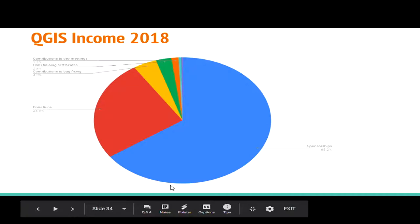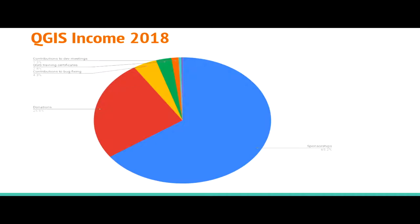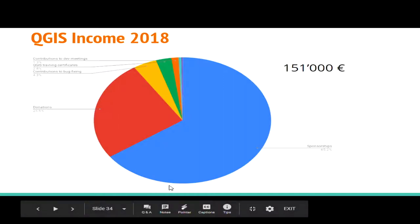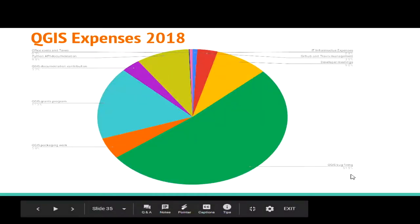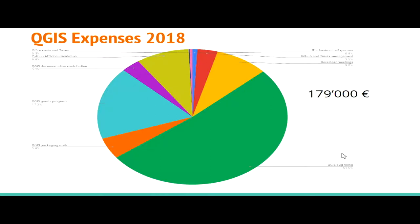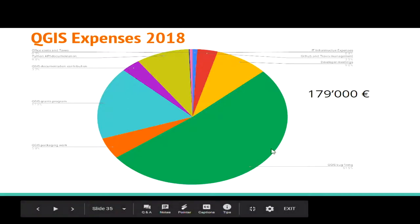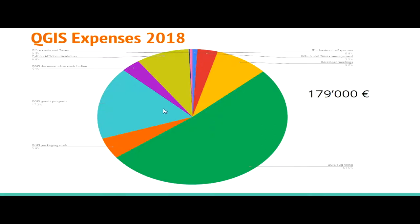Our income is around 150,000 per year, and most of it comes from sponsorships — now called sustaining memberships — with the rest from donations, training certificates, and contributions to bug fixes. Our expenses were higher last year, mainly because of QGIS 3.0 and all the issues around that. About half of expenses go into bug fixing, and we also have the QGIS grants program, packaging work, developer meetings, and API documentation.